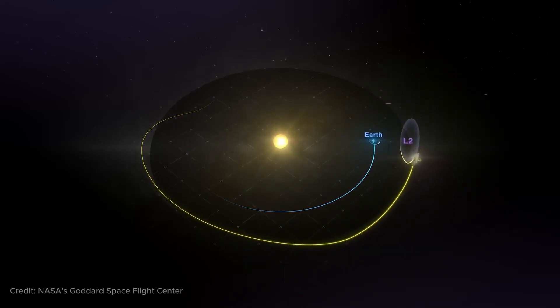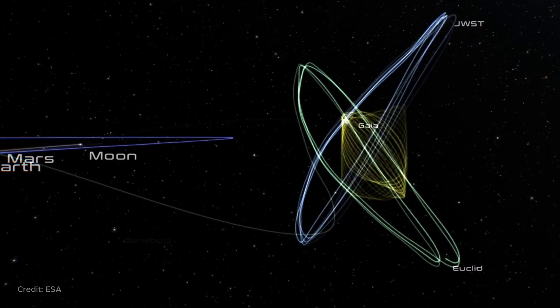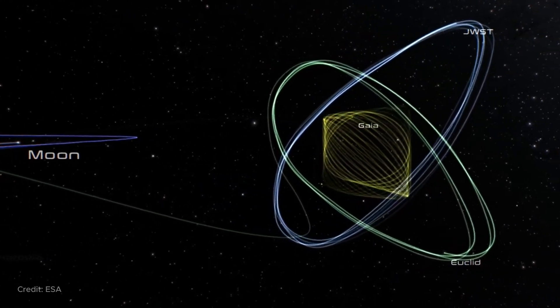If someone had told me during my school years that the orbit of a planet could look like this, or this, or even this, I would have thought it was something out of science fiction.